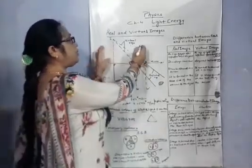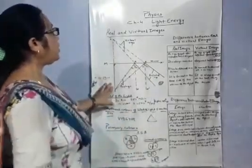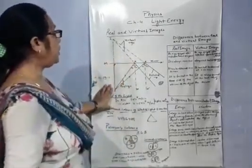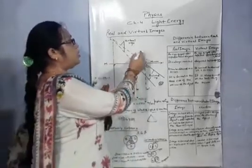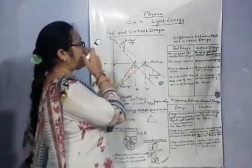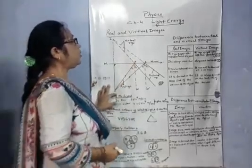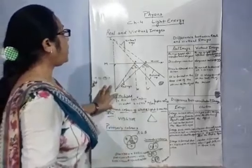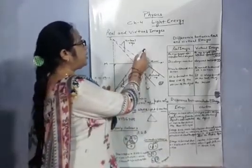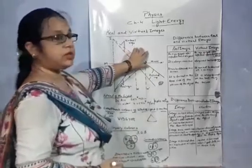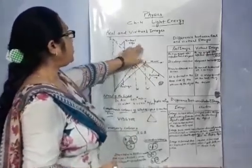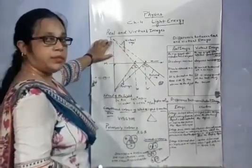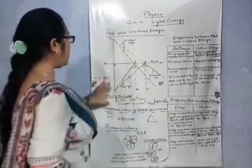The virtual image is formed on the back side of the mirror. It is formed when the rays of light after reflection appear to diverge from the mirror, but actually they intersect on the back side of the mirror. So geometrically they intersect behind the mirror. This is the diagram of virtual image.